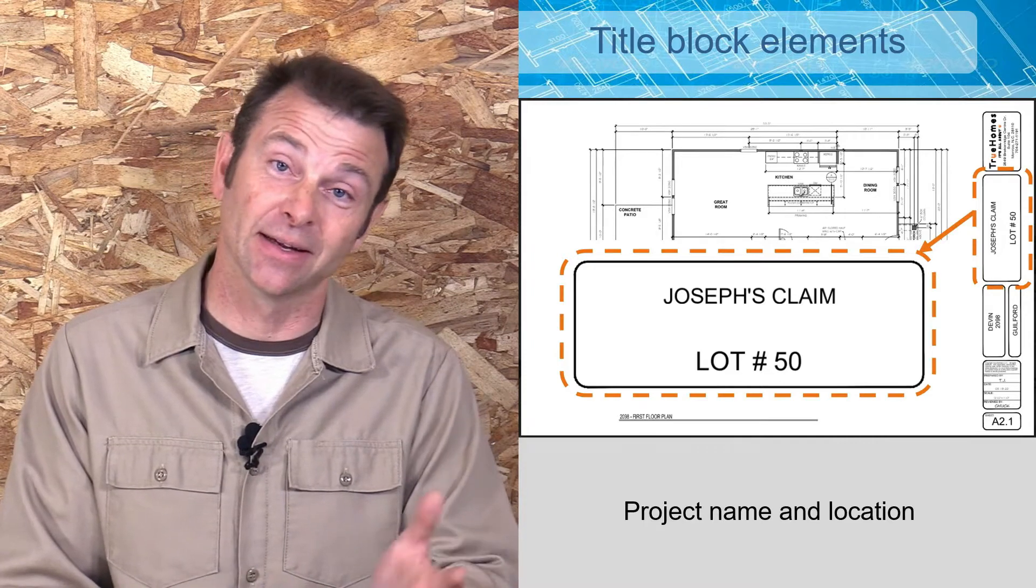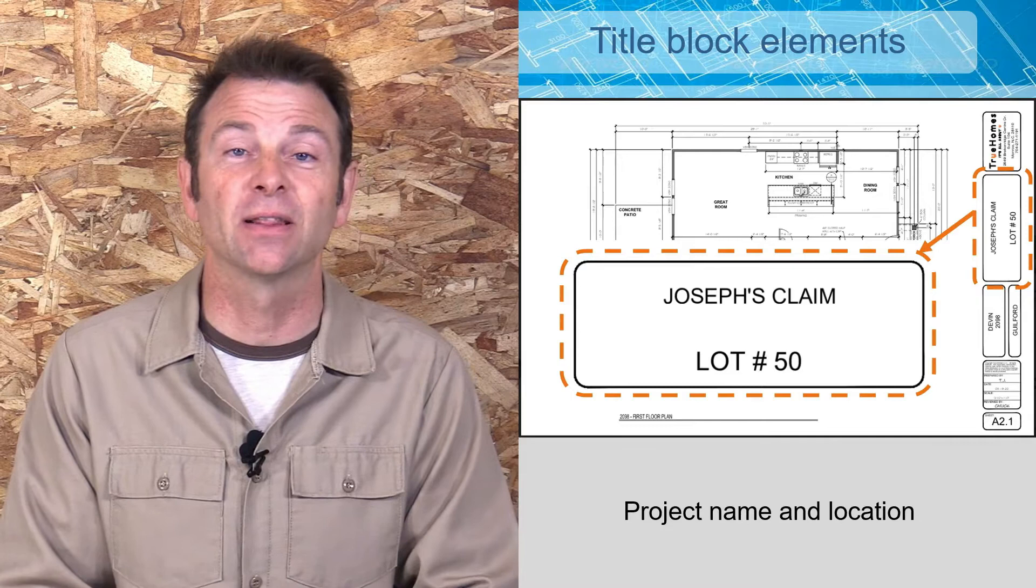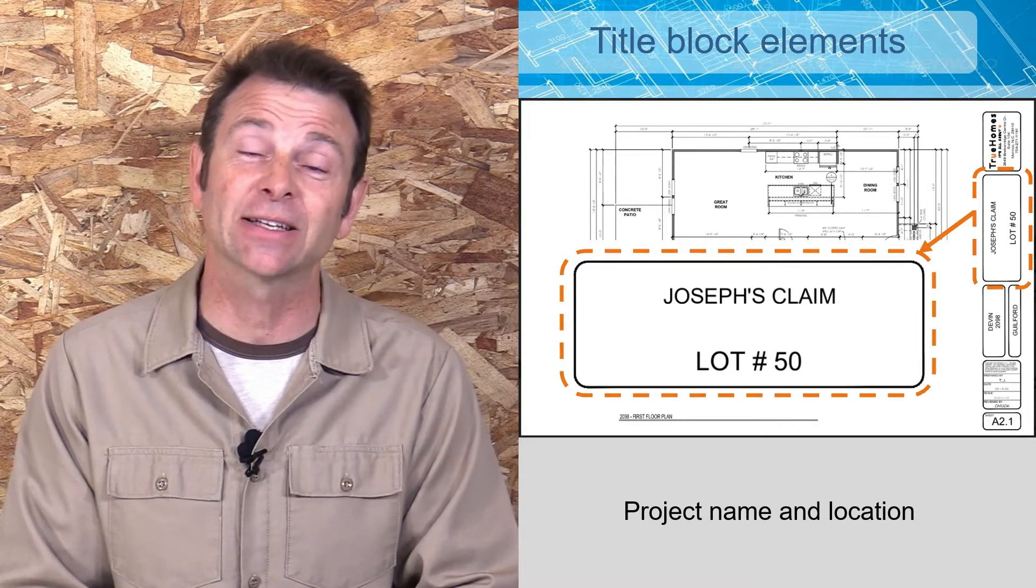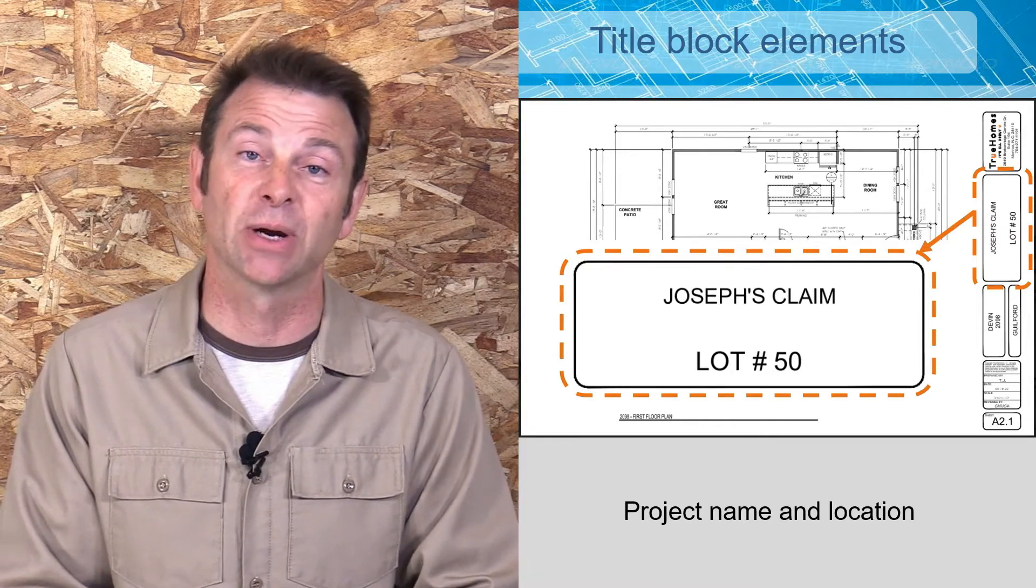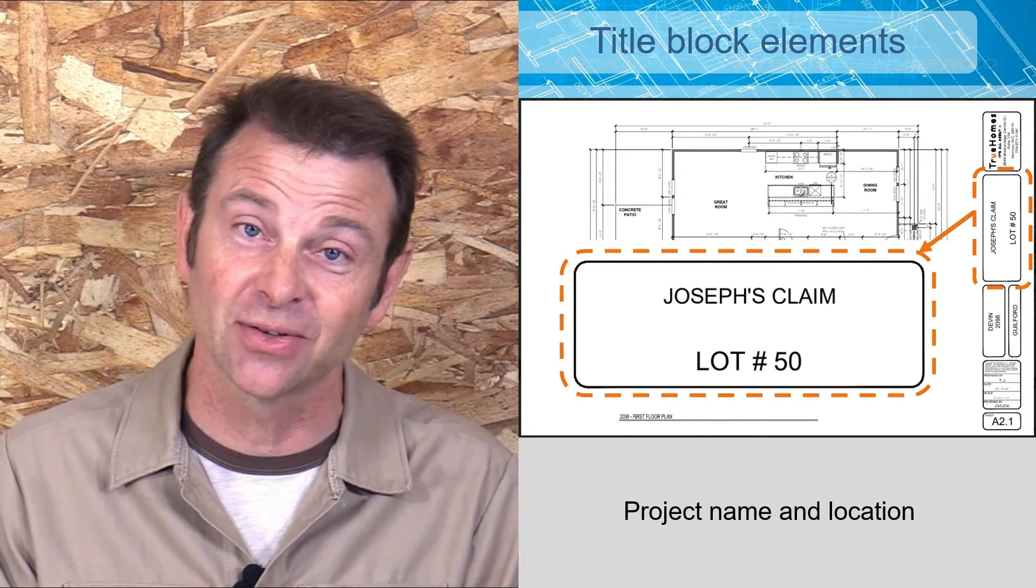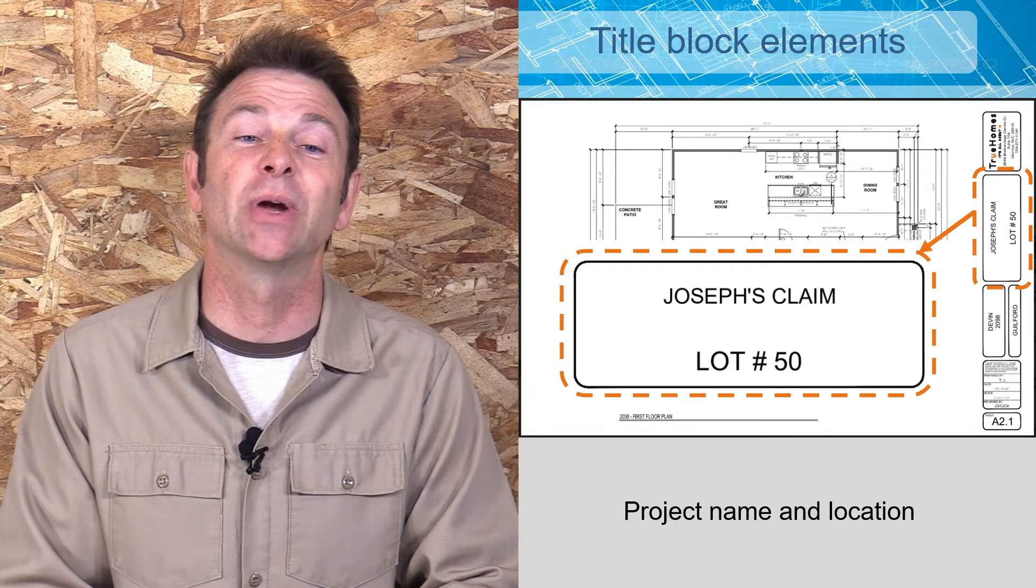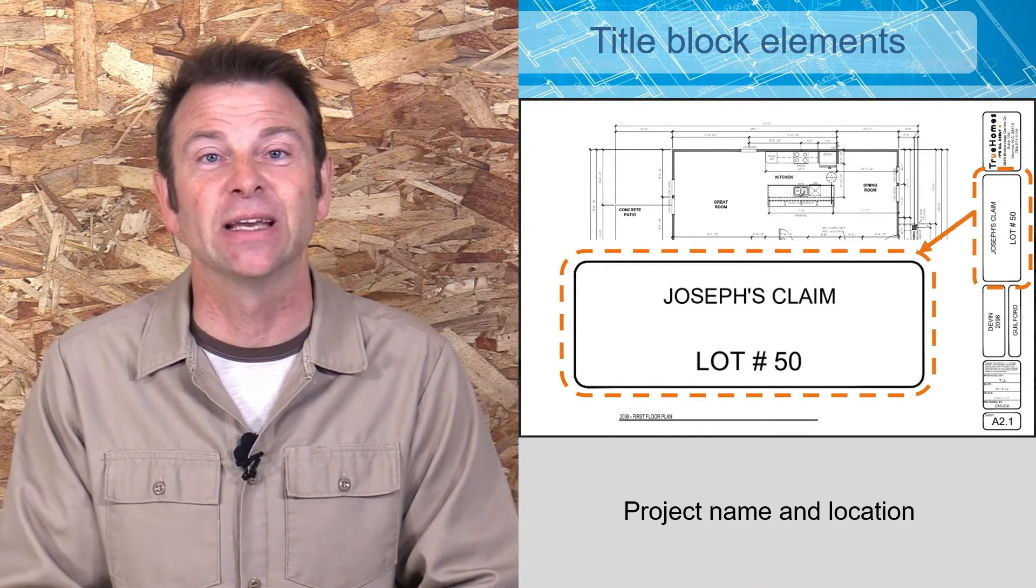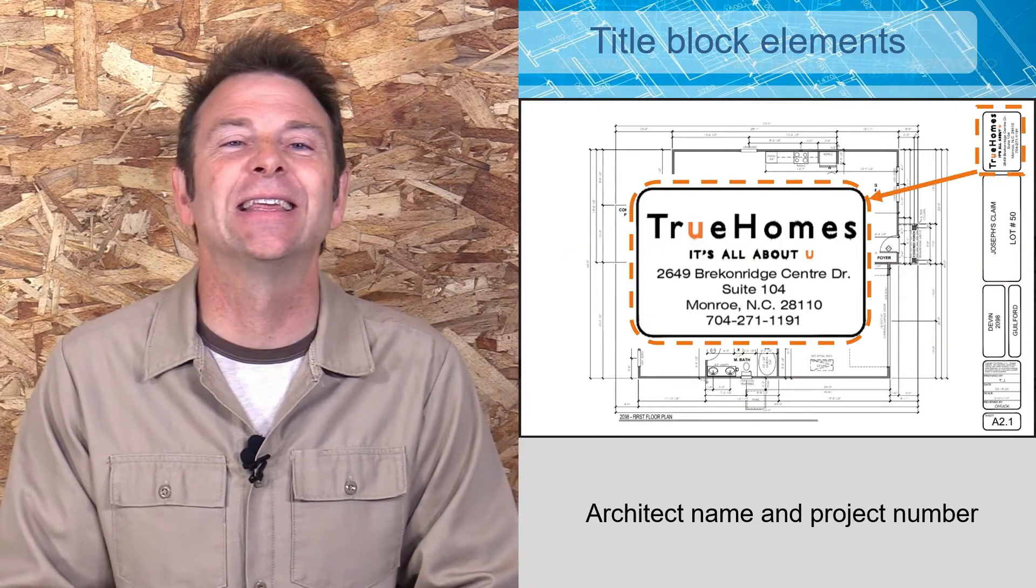One of the blocks should have the project name and location on it. This is very important. If we're building a True Home in a neighborhood with several very close together lots, there might be several of these exact homes or similar homes in very close proximity. You want to make sure that you're building the exact structure you need to be building in the exact place it needs to be built. Here we have the name of the property and the location.